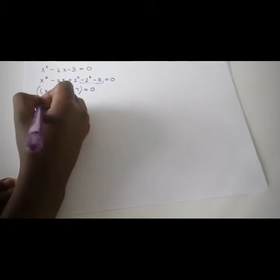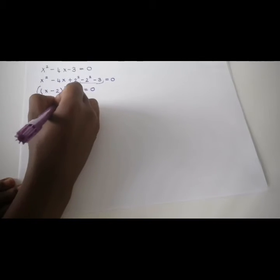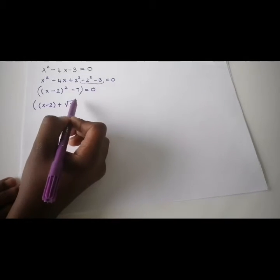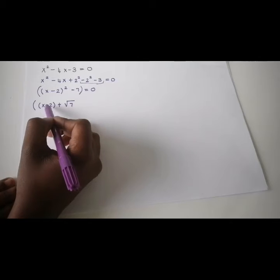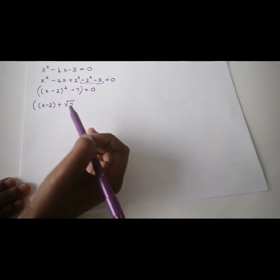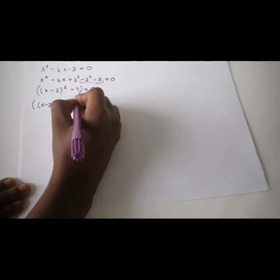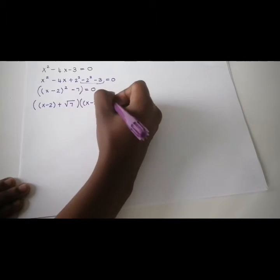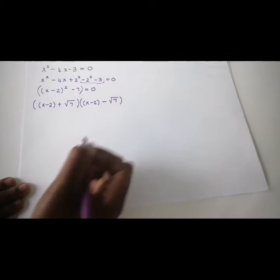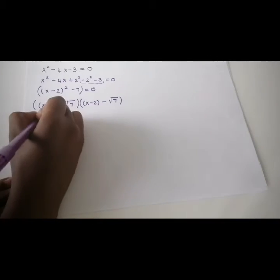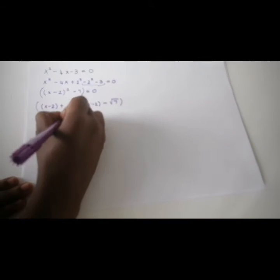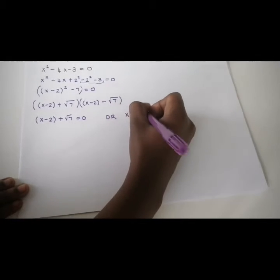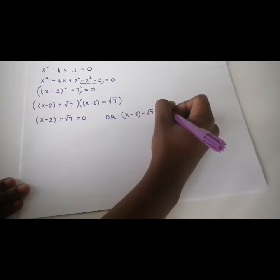So what we're going to do is say x minus 2 plus the square root of 7, times x minus 2 minus the square root of 7. If we square the square root of 7 we get 7, and if we square x minus 2 we get that — so both are perfect squares. We say x minus 2 plus root 7 equals 0, or x minus 2 minus root 7 equals 0.